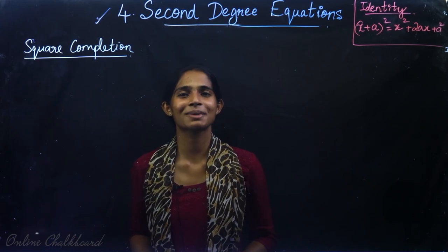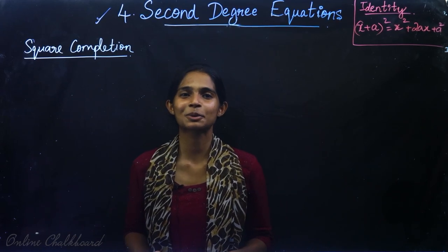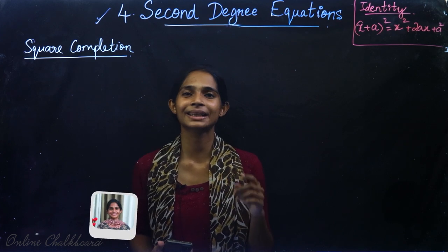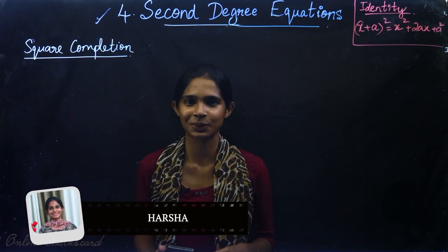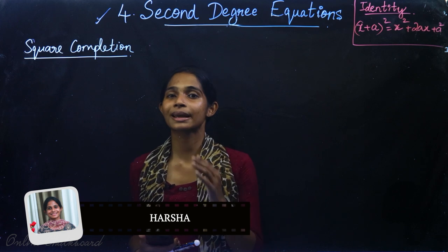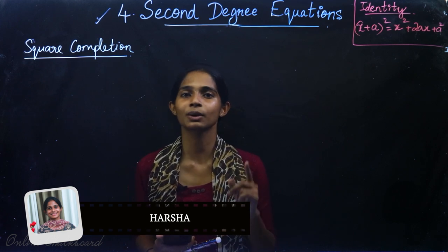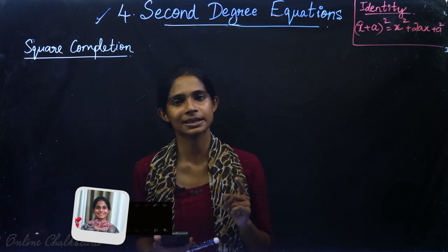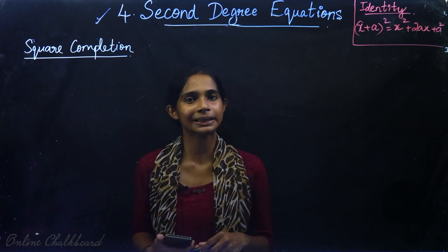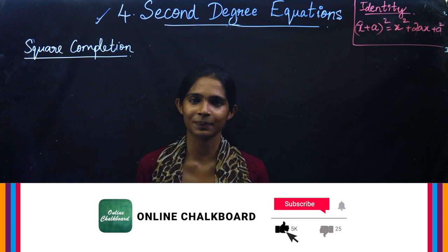Hi friends, welcome back to Online Chalkboard. We are doing chapter number 4, 2nd degree equations. In the previous videos, we started the square completion method. We did one exercise question, and now we will do the remaining exercise questions in this video.